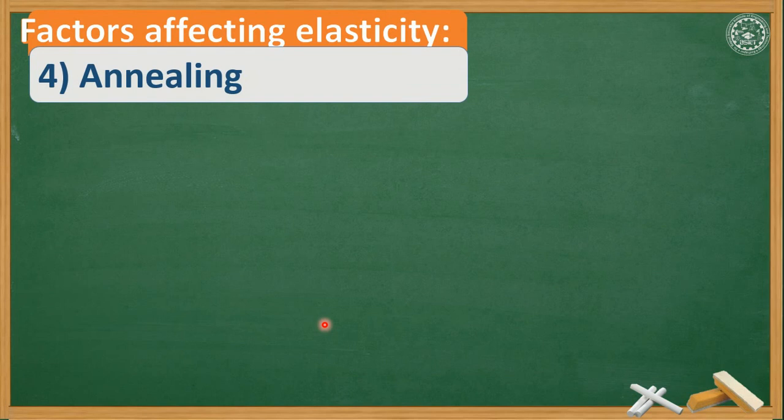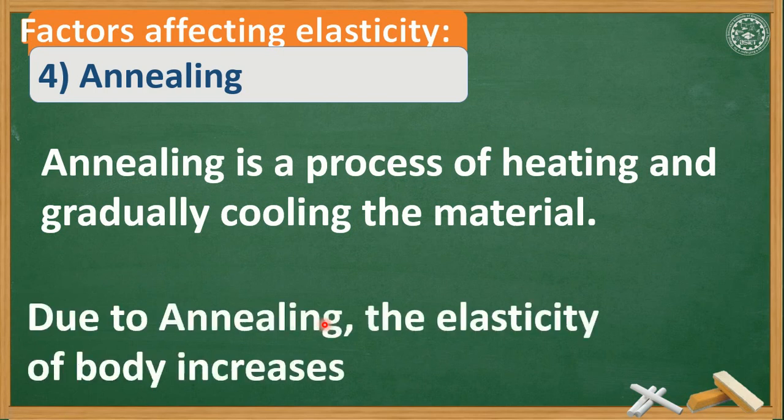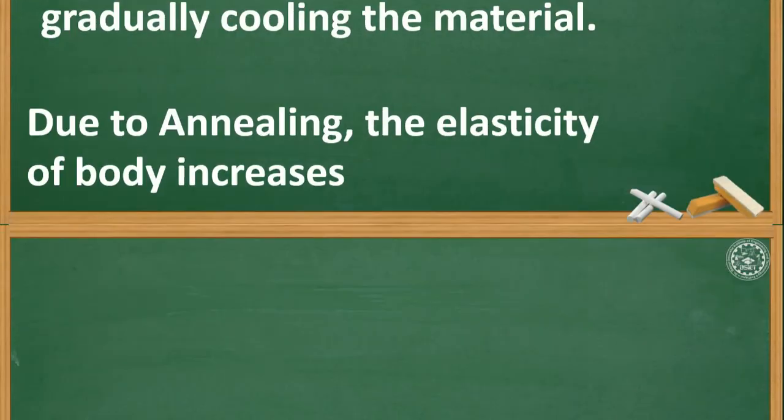Next factor is annealing. Annealing is a process of heating and gradually cooling the material. You heat the material, increase its temperature, and then you cool it gradually. Due to the process of annealing, the elasticity of body increases.